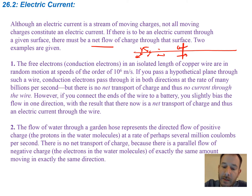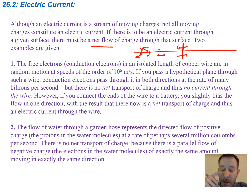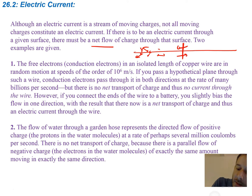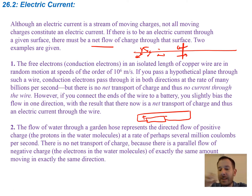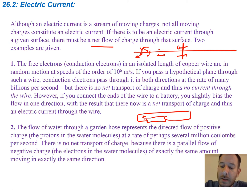However, if you connect the ends of the wire to a battery, you slightly bias the flow in one direction, with the result that there is now a net transport of charge, and thus an electric current through the wire. If you have the same wire but now add a battery — one side positive, one side negative — you're going to influence the net flow of charge. You still have some charge going in the opposite direction, but the net flow is going to be in one direction.